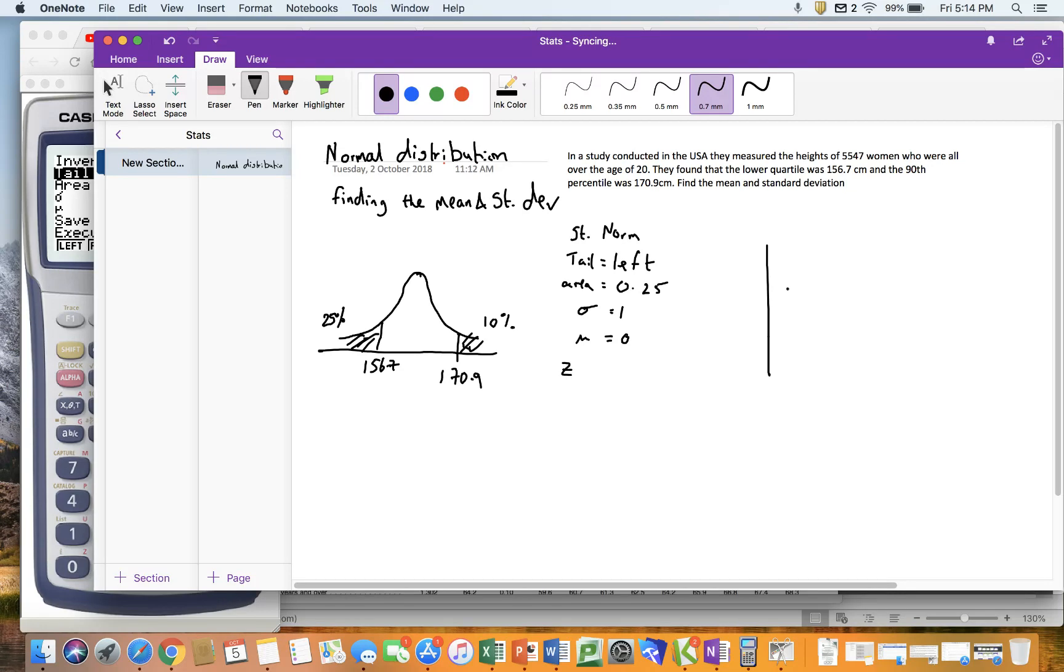And on this one, I'm going to do my tau is the right, and the area is 0.1, my standard deviation is 1, and my mean is 0, and I'm going to get a Z value. Remember, this can change in every new question that you do.